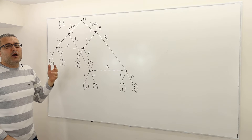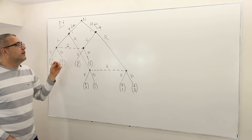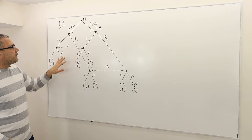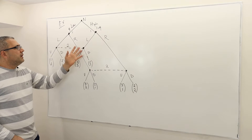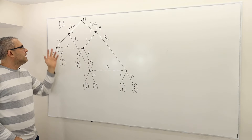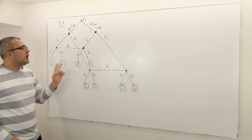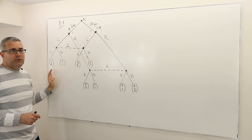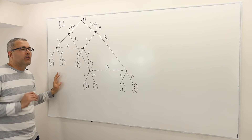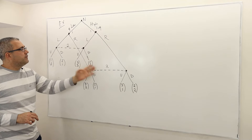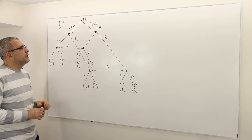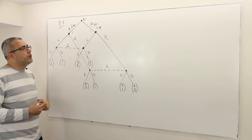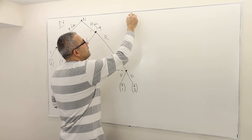Remember the Stackelberg competition? This is exactly that one with different payoffs. Then player two observes the choice of player one — either left or right — but player two cannot observe the type of player one. So therefore we have two information sets for player two. The question is: what is the perfect Bayesian equilibrium in this game?